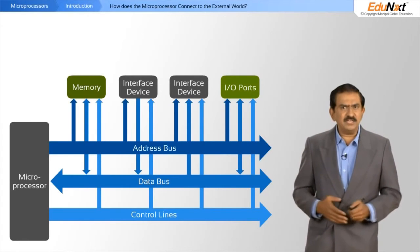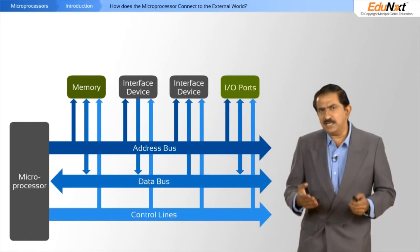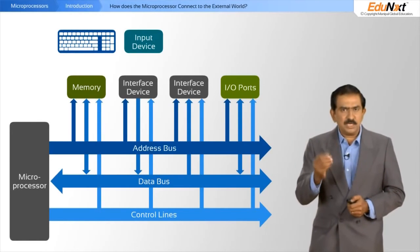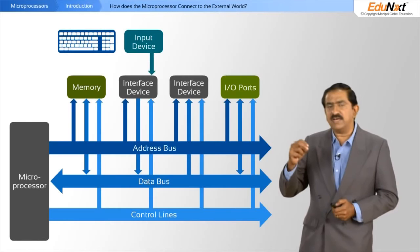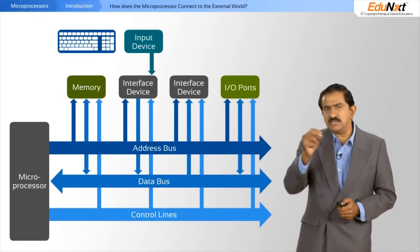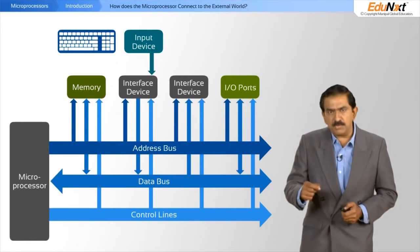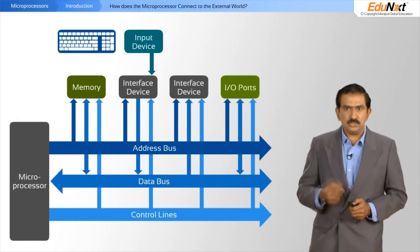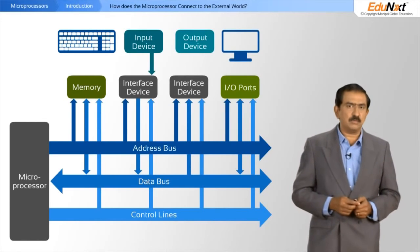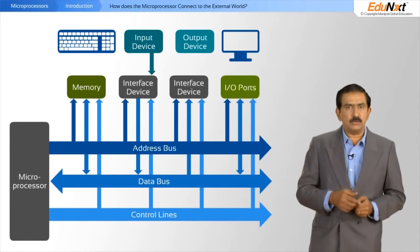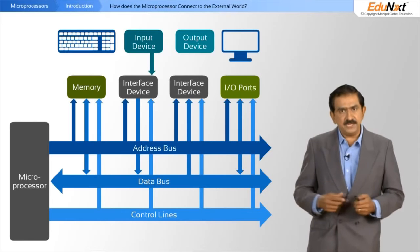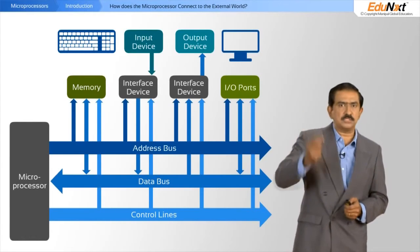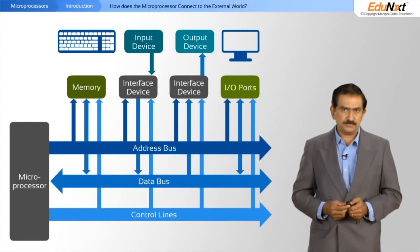If you take an input device like a keyboard connected to an interface device, you would see from the diagram that the data bus flows into the processor. On the other hand, if you have an output device like a monitor or an LCD or LED display, the data bus comes out of the processor into that output device.